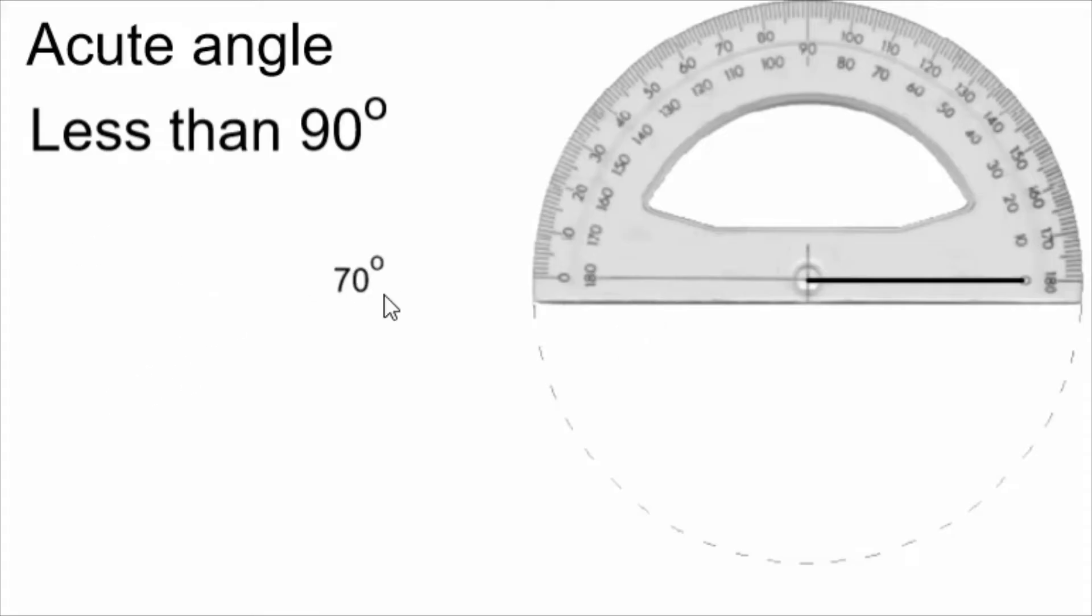I'm going to draw a 70 degree angle. So to do that I have to count up the degrees with these numbers on the edge of the protractor. I'm counting up to 70, but notice that there are two sets of numbers. Because I am starting at zero, I'm using the inside set of numbers, and I count up those numbers until I get to the 70.